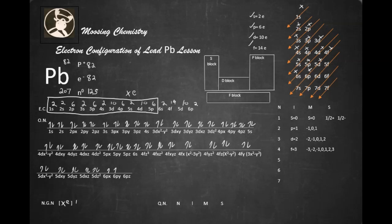So we're going to do this numerically in order. Then we're going to go to 5d10, then 6s2, and then 6p2.